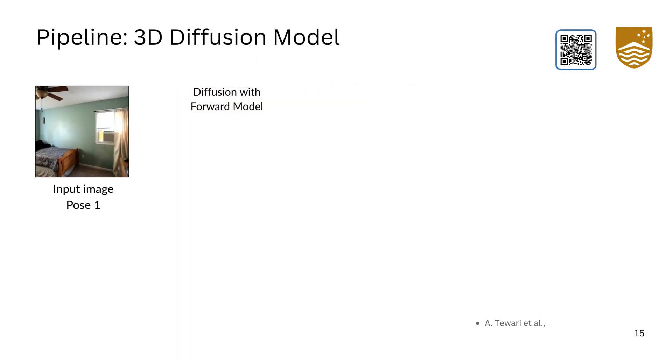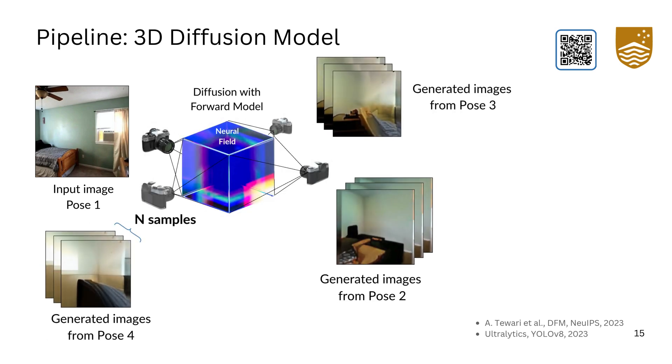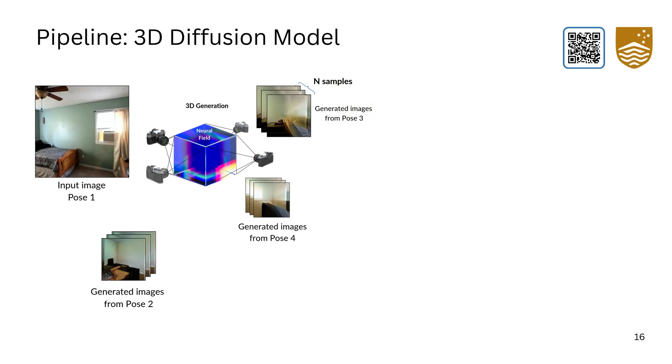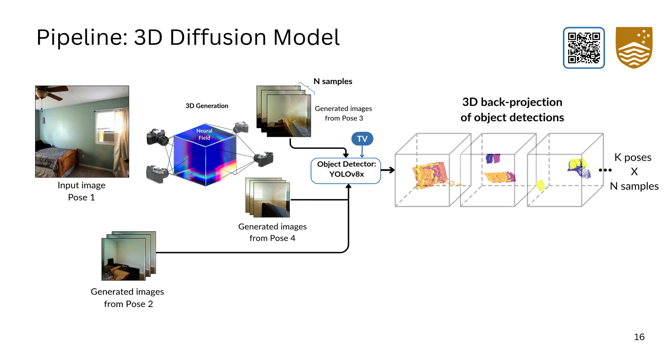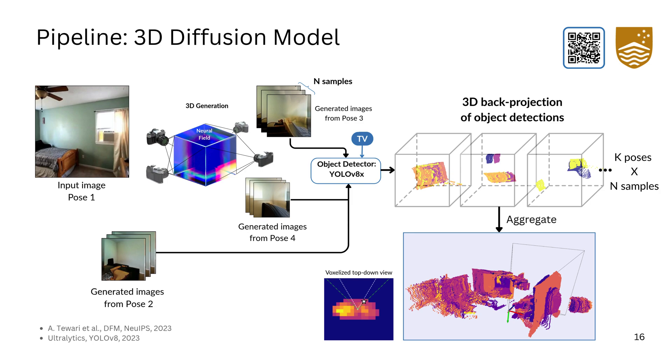Our third and final pipeline, diffusion with forward models, samples novel scenes from a neural field which renders novel views of the scene along with their depths. Similar to the approach in the 2D diffusion model, we perform object detection, this time for a TV. The bounding boxes are thus back-projected using the depths and aggregated, voxelized, and normalized into a 3D distribution.